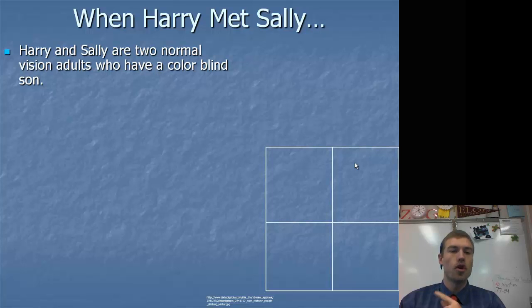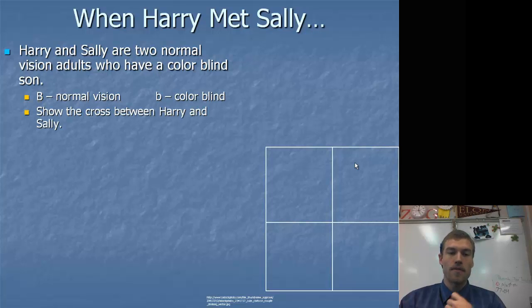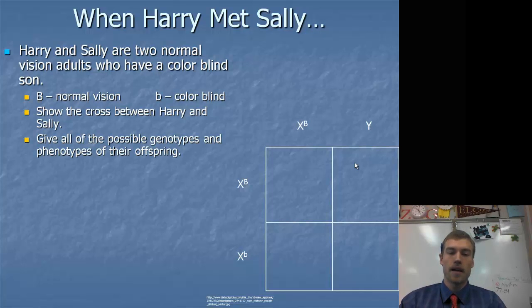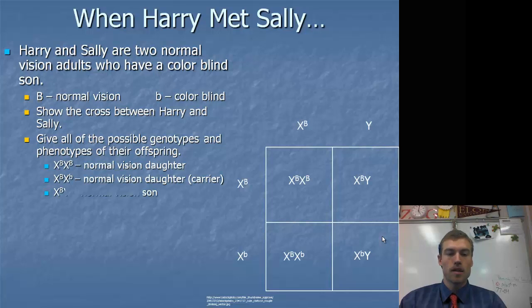We want to do a cross. Harry and Sally are two normal vision adults who have a colorblind son. They've got the big B, little B. So we've got X big B Y, X big B and then X little B. That's the only way that we could get a colorblind offspring, and it's going to be a male. Those are the different possibilities that we could have. We could get a carrier female that would be just like her mother in terms of being able to pass on the trait to a son.